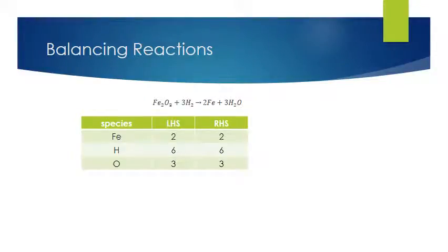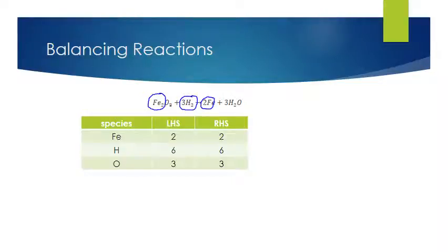Let's consider the reduction of iron oxide. The reaction is iron oxide reacting with hydrogen to give us iron and water. Our species are iron, oxygen, and hydrogen. There are two iron atoms on the left-hand side and two on the right-hand side. We have six hydrogens on the left-hand side and six hydrogens in the water on the right-hand side. There are three oxygens on the left-hand side in the oxide, and three that are removed with the water. Notice how the number of iron, hydrogen, and oxygen on each side of the equation stays the same.